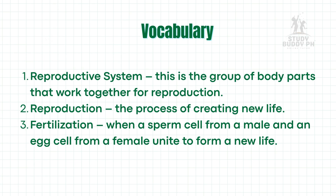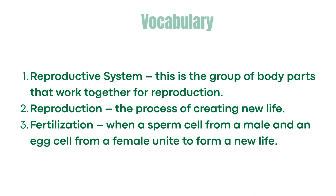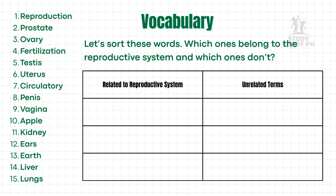Let's unlock some important vocabulary. Reproductive system: this is the group of body parts that work together for reproduction. Reproduction: the process of creating new life. Fertilization: when a sperm cell from a male and an egg cell from a female unite to form a new life. Now let's sort these words — which ones belong to the reproductive system and which ones don't?